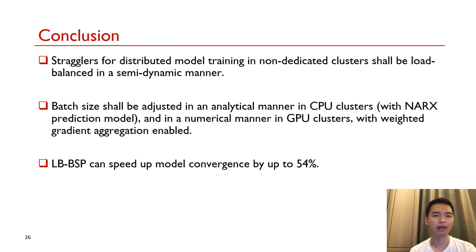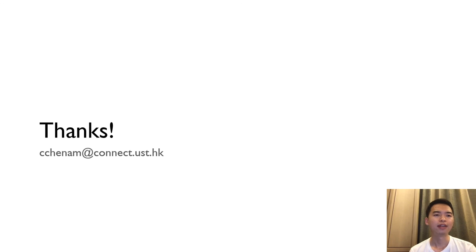To conclude, in this work we find that stragglers in non-dedicated clusters should be load-balanced in a semi-dynamic manner, by tuning the batch size at the iteration boundaries. In particular, batch size should be adjusted in an analytical manner for CPU clusters, and in a numerical manner for GPU clusters. A prototype implementation shows that LBBSP can speed up model convergence by up to 54%. Thank you for listening to my presentation. Welcome any questions.